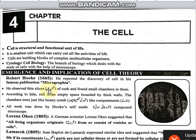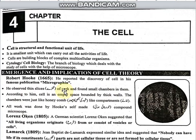In Micrographia, Robert Hooke observed thin slices of cork and found small chambers in them. According to him, a cell is an empty space bounded by thick walls. The chambers were just like a honeycomb.